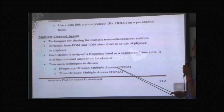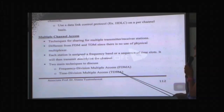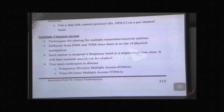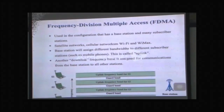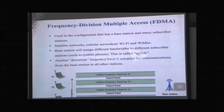In Frequency Division Multiple Access (FDMA), each station is assigned a frequency band. In Time Division Multiple Access (TDMA), each station is assigned a sequence of time slots, and it can transmit directly on the channel. There is also CDMA — Code Division Multiple Access — but we are not covering it here. You may have heard of a telephone company that used CDMA, but since it's not in use now, it is not included in the material.